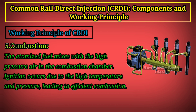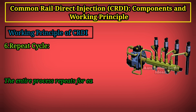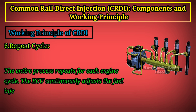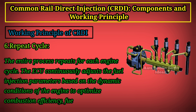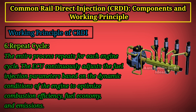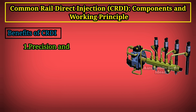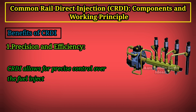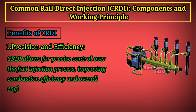Step 6 — Repeat Cycle: the entire process repeats for each engine cycle. The ECU continuously adjusts the fuel injection parameters based on the dynamic conditions of the engine to optimize combustion efficiency, fuel economy, and emissions. Benefits of CRDI — Precision and Efficiency: CRDI allows for precise control over the fuel injection process, improving combustion efficiency and overall engine performance.